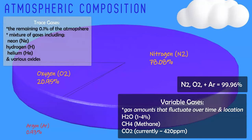Beyond that, we have what's called the variable gases, which can vary in amounts depending on location and atmospheric conditions. These gases are methane (CH4), water, and CO2 — and these can also be classified as the greenhouse gases. Then you have the trace gases, which equate to about 0.1% of the atmospheric composition, ranging from different oxides to neon, helium, and hydrogen. Finally, you have aerosols — small particulate matter and cloud condensation nuclei like pollen, dust, and sea spray — that can help to form clouds.